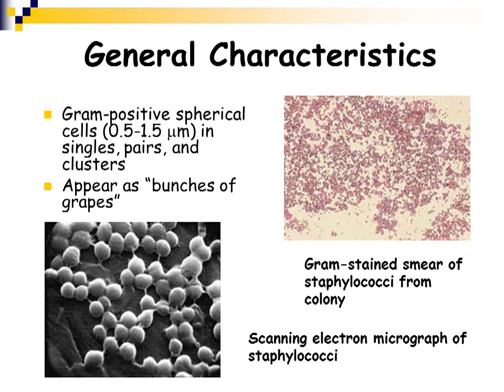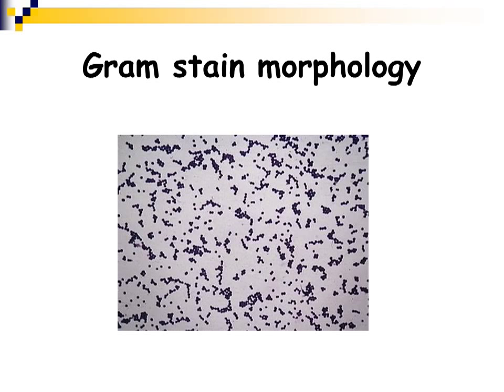Staphylococcus is spherical in shape and usually appears as bunches of grapes. You can see on the right-hand side a microscopic photo of staphylococcus in these nice clusters — a beautiful gram stain with nice purple, tiny little cocci.